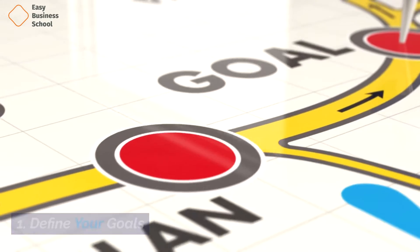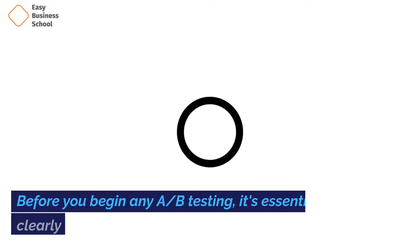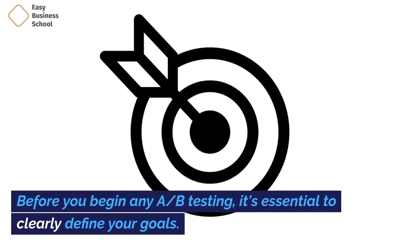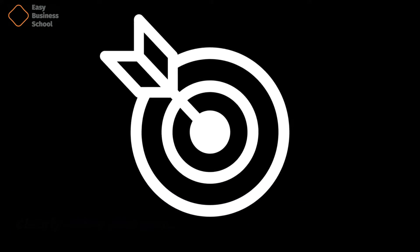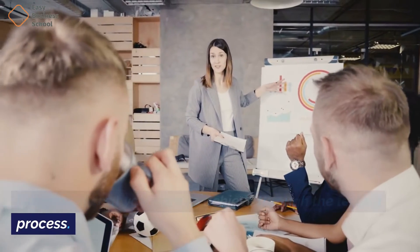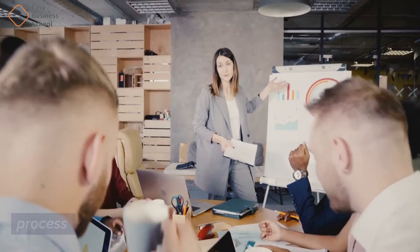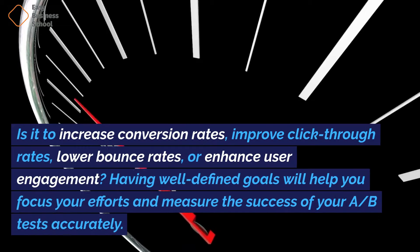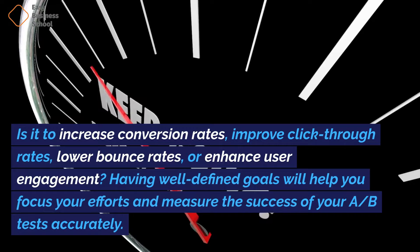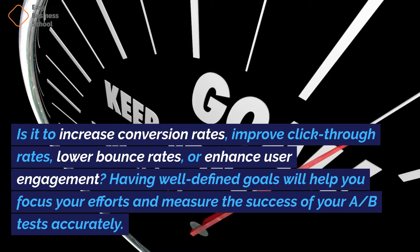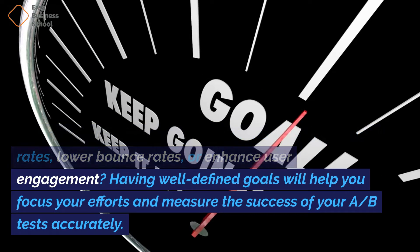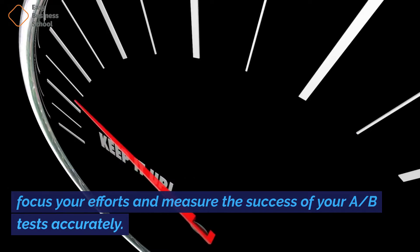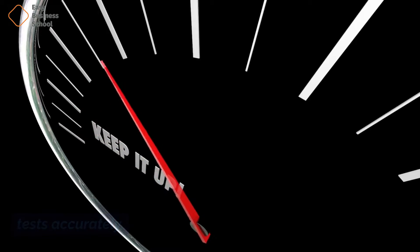Step 1: Define your goals. Before you begin any A/B testing, it's essential to clearly define your goals. Determine what you want to achieve through the testing process. Is it to increase conversion rates, improve click-through rates, lower bounce rates, or enhance user engagement? Having well-defined goals will help you focus your efforts and measure the success of your A/B tests accurately.